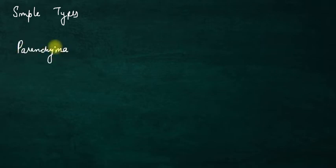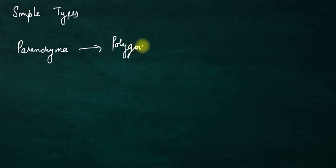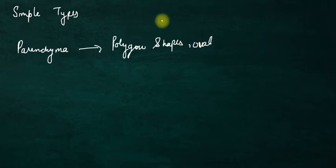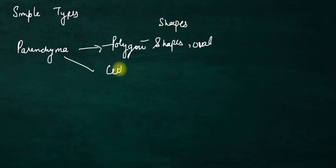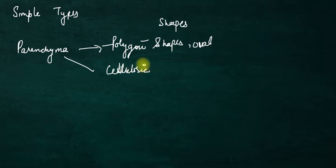Now let's talk about parenchyma tissues. In terms of shape, they get into polygon shapes and oval shapes. The cell wall is made of cellulose, as we have discussed earlier. And in parenchyma tissues, intercellular spaces are found — meaning there is a small gap between the cells.